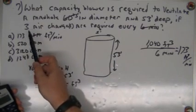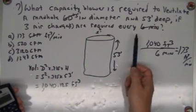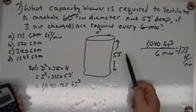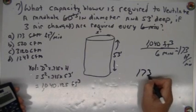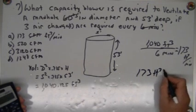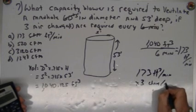And there's something over here that says 3 air changes are required every 6 minutes. So in order for this to do 3 times every 6 minutes, the fan is going to have to be 3 times bigger. So I'm going to take 173 feet cubed per minute times 3 changes per minute.